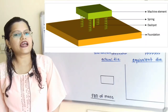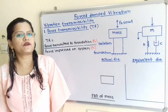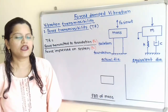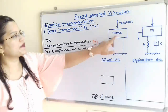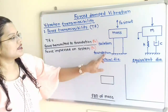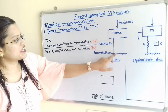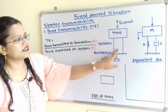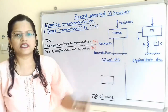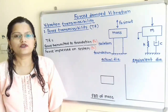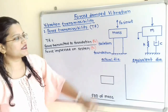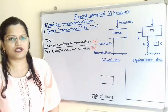We will first understand the concept of force transmissibility. The notation is TR. If we observe this diagram, here is the machine of mass M. Then, in between this machine and foundation, an isolator is provided. The role of the isolator is to reduce the vibrations transmitted from this machine to the foundation.